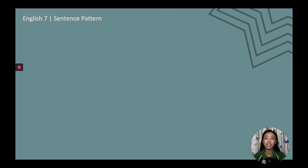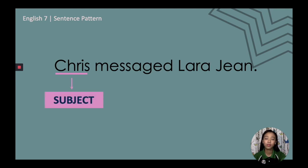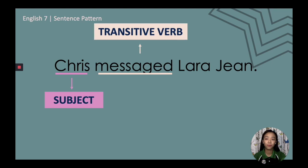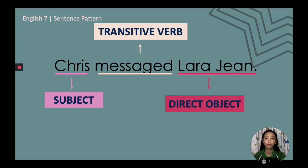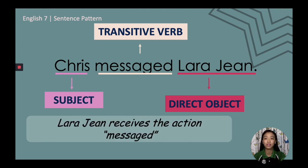Next sentence: 'Chris messaged Lara Jean.' The subject is the noun Chris. The transitive verb is 'messaged.' And the direct object is Lara Jean. To identify the direct object, ask: who receives the action in the sentence? The answer is Lara Jean.